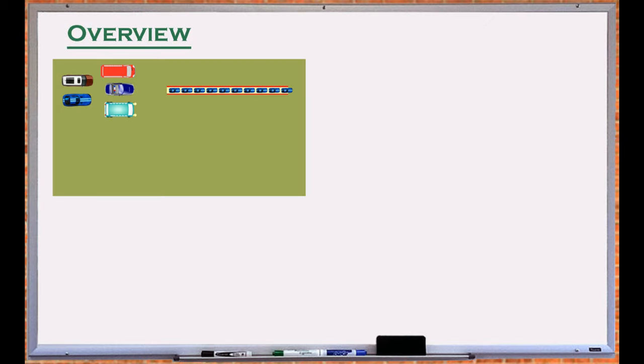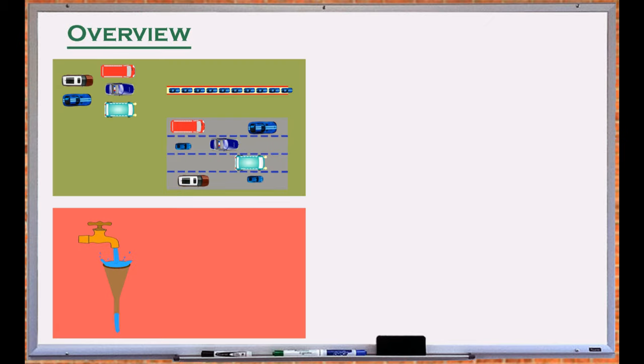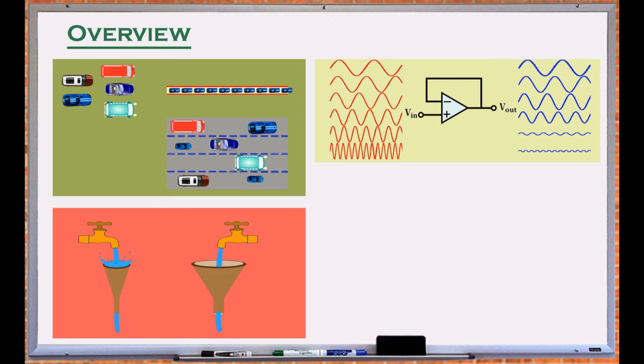The flow of materials, whether cars in a highway, liquid through a funnel, or electrical signals within a circuit, depends on the capacity of the medium to handle the amount of traffic. In electronics, this capacity is referred to as bandwidth.